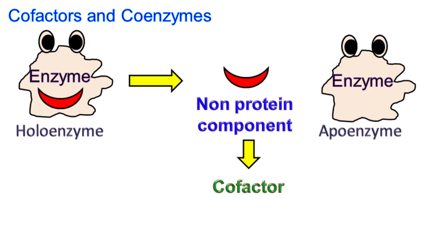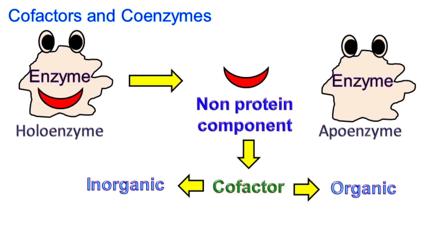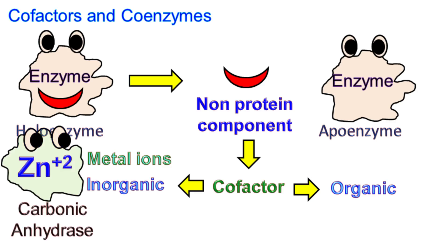The cofactor can either be inorganic or organic molecules. The inorganic cofactors are usually metal ions required for enzyme activity. For example, the enzyme carbonic anhydrase uses a zinc ion as a cofactor at its active site.